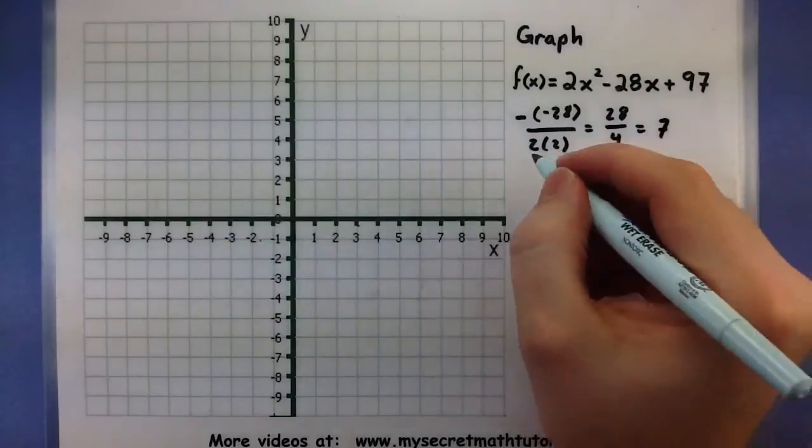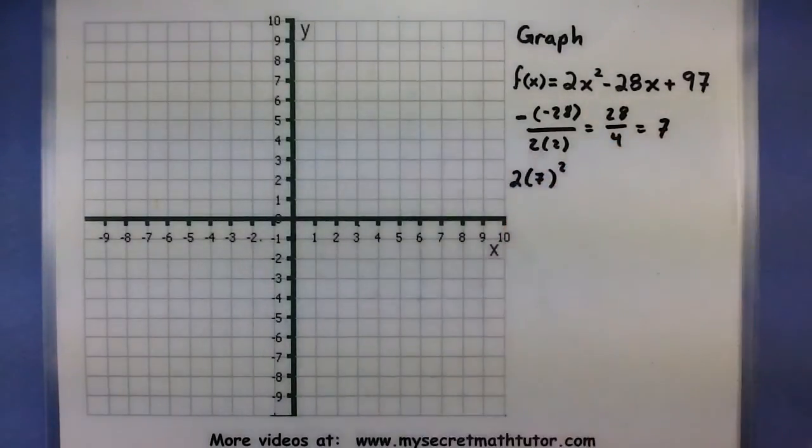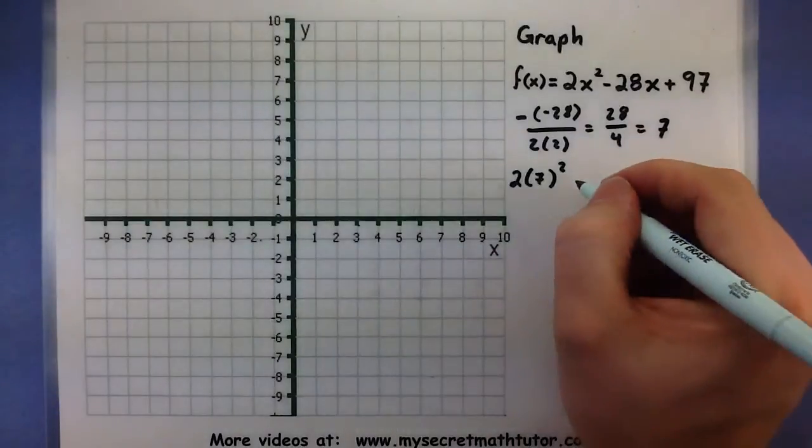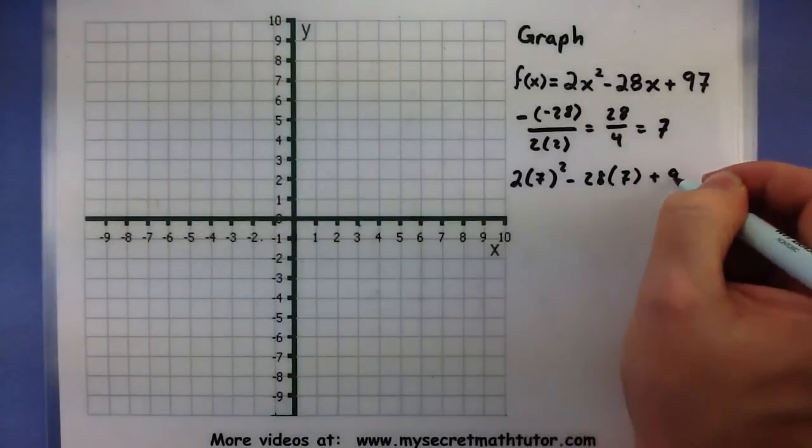To find the y coordinate, let's plug in the 7, see what this does. So 2 times 7 squared, minus 28 times 7, all plus 97.